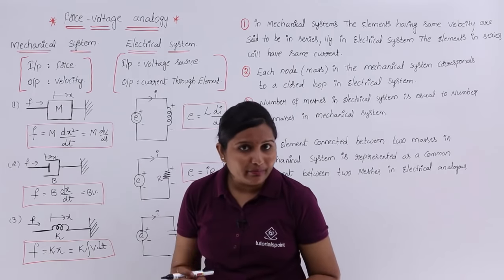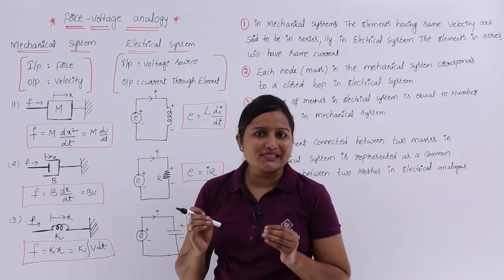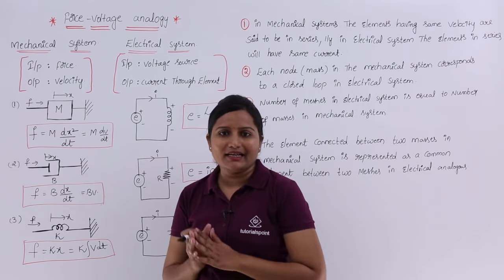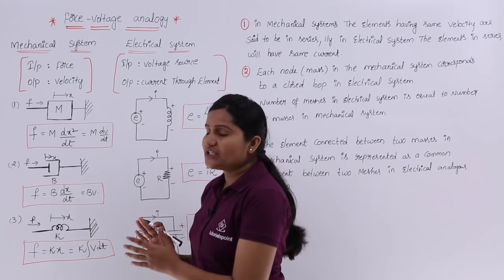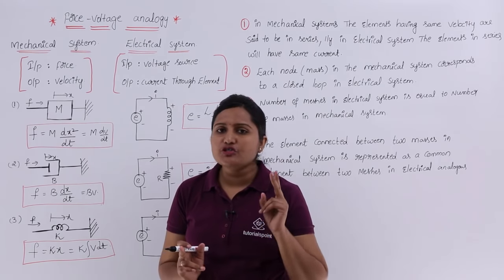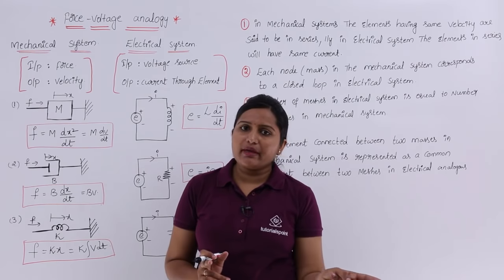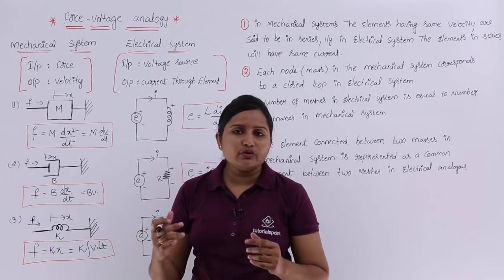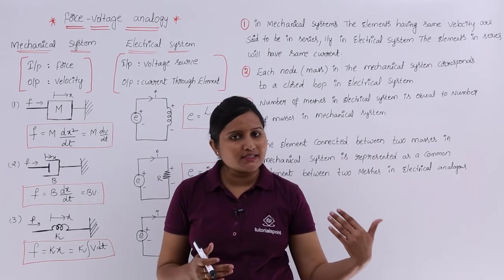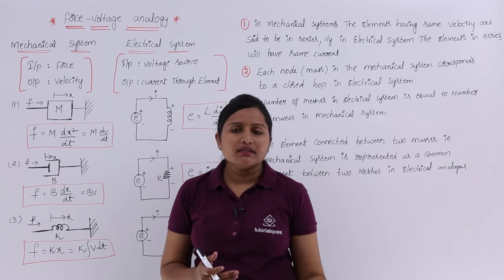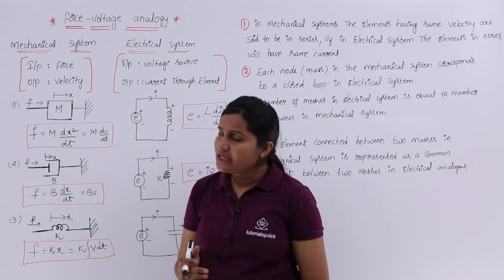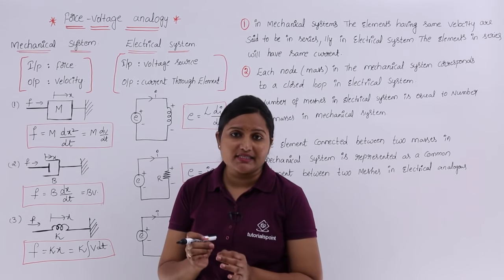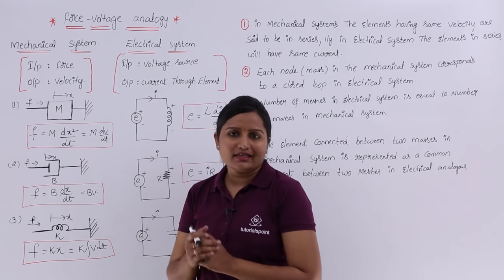For example, if you have any mechanical translational system and you want to convert it into an electrical network, this is the analogy you need to follow. We have two analogies to convert any mechanical translational system into an electrical system: force voltage analogy and force current analogy. Force current analogy we will discuss in the next class. Here, this is the force voltage analogy to convert a mechanical translational system into an electrical network.